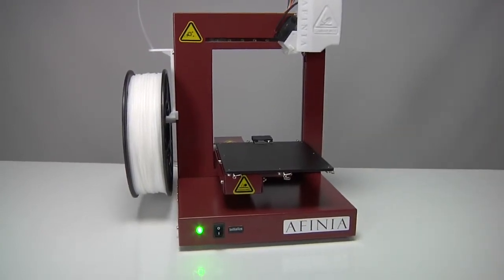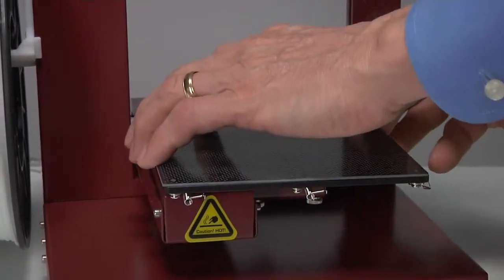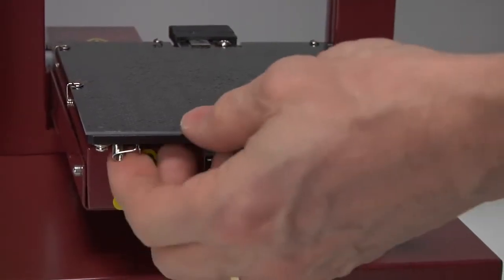Remove any extruder filament from the bottom of the nozzle. Place the printing surface, such as the perfboard, on the printer platform.